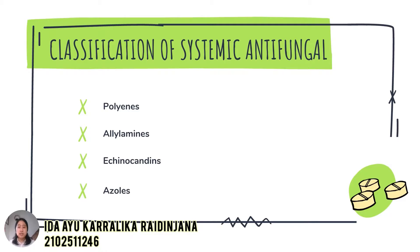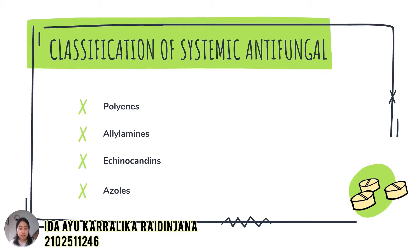Allylamines are a non-competitive inhibitor of squalene epoxidase. Allylamines produce ergosterol deficiency, which is fungistatic, but fungal membrane function and wall synthesis are simultaneously disturbed by the accumulation of intracellular squalene. The synthesis disruption of cell walls is also fungicidal.